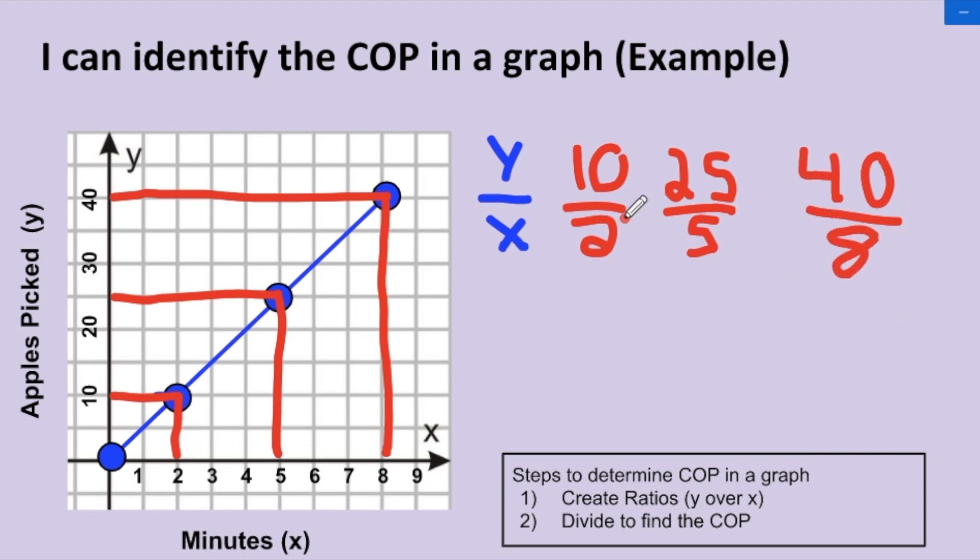When I divide these, 10 divided by 2 equals 5, 25 divided by 5 equals 5, and 40 divided by 8 equals 5. So since those are all the same number, we know that our COP for this graph is going to be equal to 5.